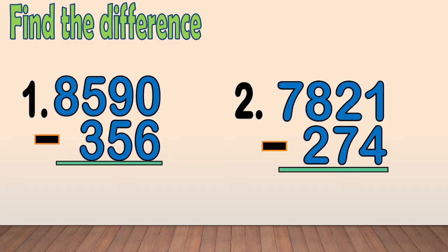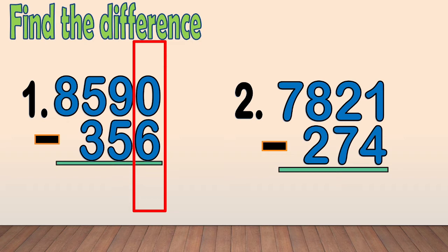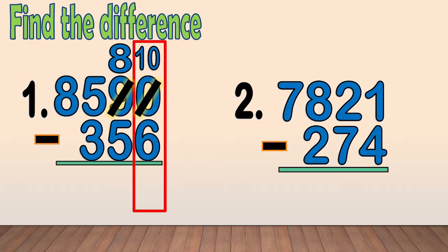Let's answer this. Find the difference. Number 1: 8,590 minus 356. First, we subtract the ones: 0 minus 6. We cannot subtract 6 from 0, so we regroup one 10 from 9. We have 10 ones. We cross out the 0 and write 10 as new ones. Now we only have 8 tens — we cross out the 9 and write 8 at the top. We subtract the ones: 10 minus 6 equals 4.